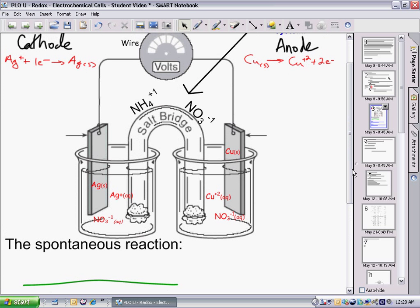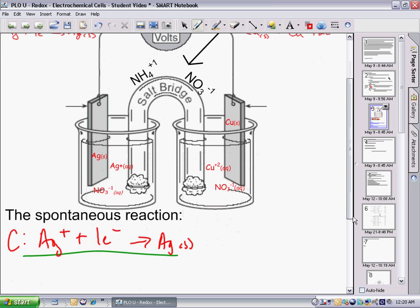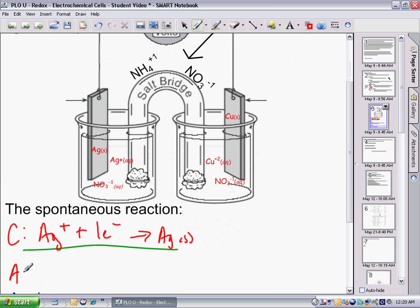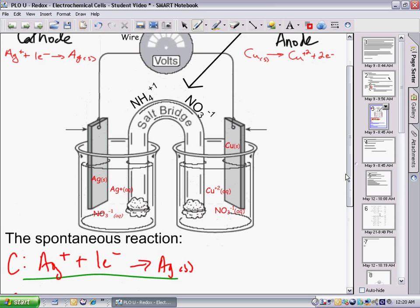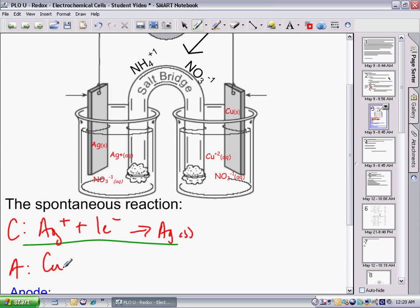With these reactions, at the cathode, Ag+ + e- goes to Ag solid. And at the anode, copper solid goes to copper +2, plus 2e-.